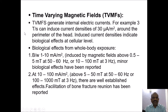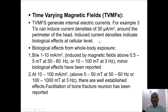Now let us study the effects of time-varying magnetic fields (TVMFs). These fields generate internal electric currents. For example, 3 Tesla per second can induce current densities of 30 mA per square meter around the perimeter of the head. Induced current densities indicate biological effects at the cellular level. For whole body exposure, between 1 to 10 mA per square meter, induced by magnetic fields of about 0.5 to 5 mT at 50 to 60 Hz, or 10 to 100 mT at 3 Hz, there are well-established effects.